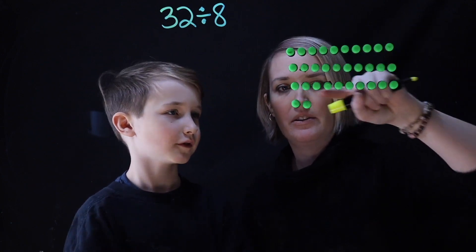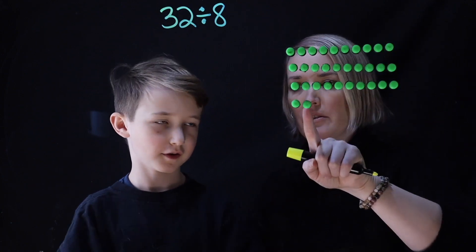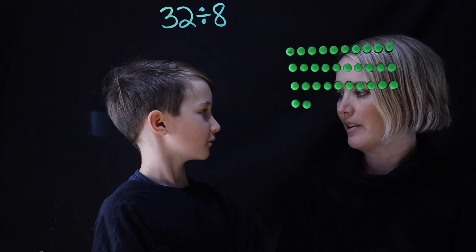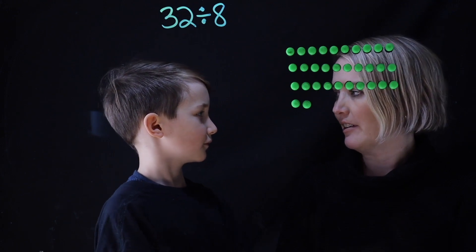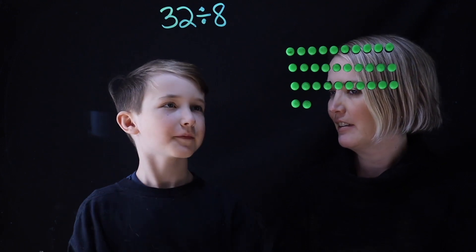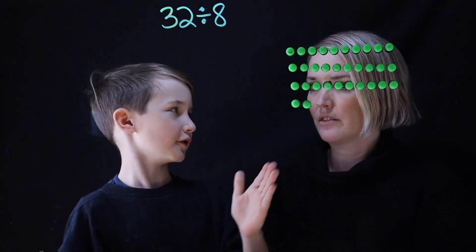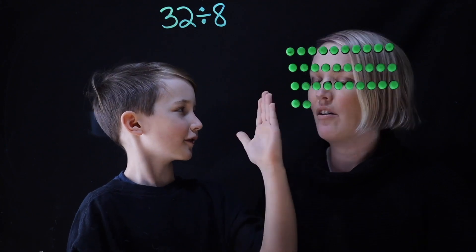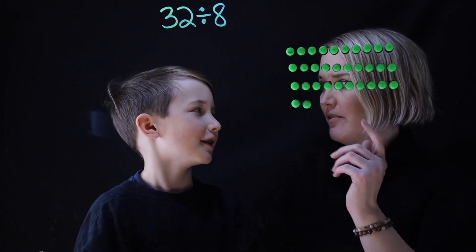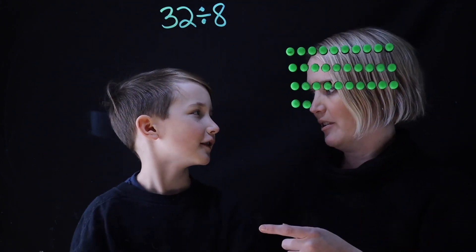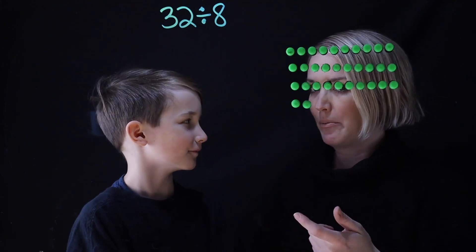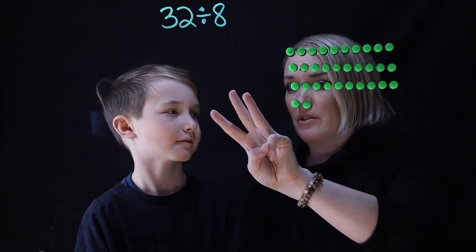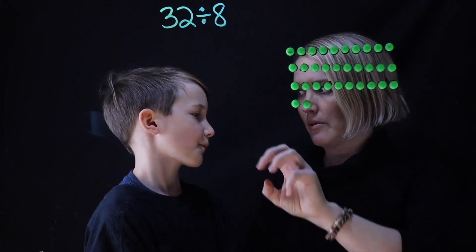I've got 10, 20, 30, 31. Can we just split 32 into... you want to do that where you just keep on dividing by 2, because you like dividing by 2. So whenever it's divided by 8, you can divide by 2 three times in a row.